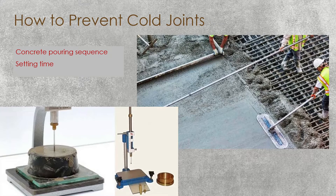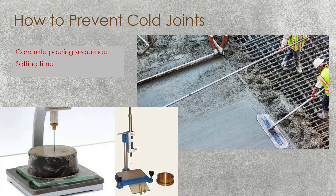How to prevent Cold Joints: the first thing is best construction practices. Before starting construction, you must plan the pour in sequence. Based on that sequence, you can carry out the concrete pour. If you plan the pour in sequence, you know the time needed to reach each pour, and can determine the concrete volume, height, and width of a single pour. Then you can always pour fresh concrete before the old concrete layer starts hardening — before its initial setting time.